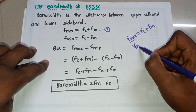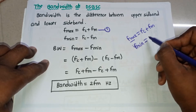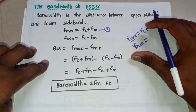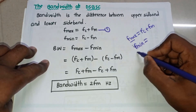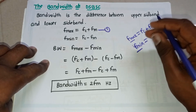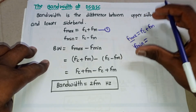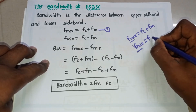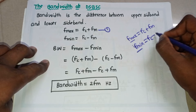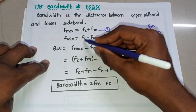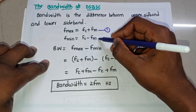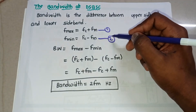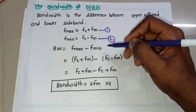The lower sideband always has the minimum frequency, f_min. The lower sideband frequency is fc minus fm — that is the carrier frequency minus the message frequency. This is equation number two. Bandwidth is nothing but f_max minus f_min.